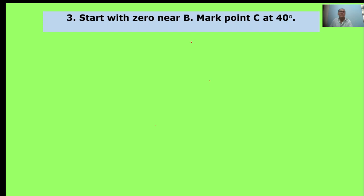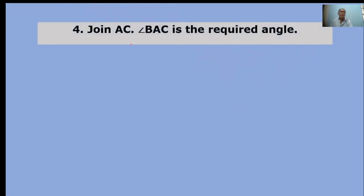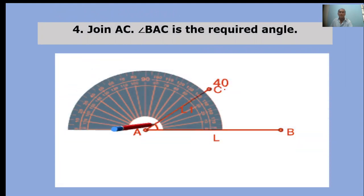Start with zero near B. Mark point C at 40 degrees. Here, zero is at point A. We take the point to 40 degrees. Join AC. Angle BAC is the required angle. BAC equals 40 degrees.